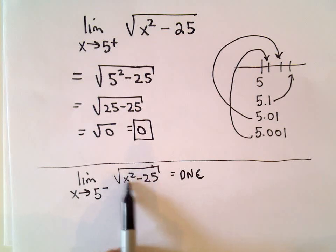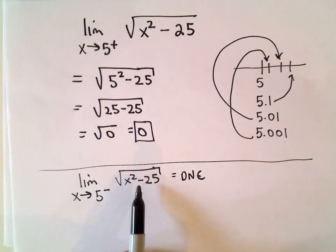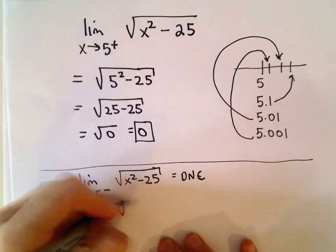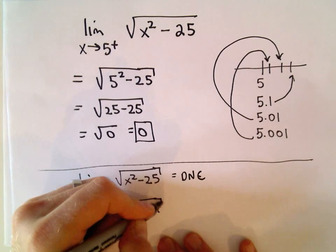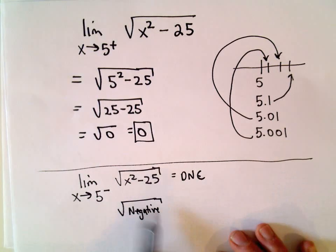Because notice if you take numbers a little bit smaller than 5, well if you square them, it's going to be a little bit smaller than 25 so that when I subtract 25 away I would basically end up getting a negative number underneath my square root.